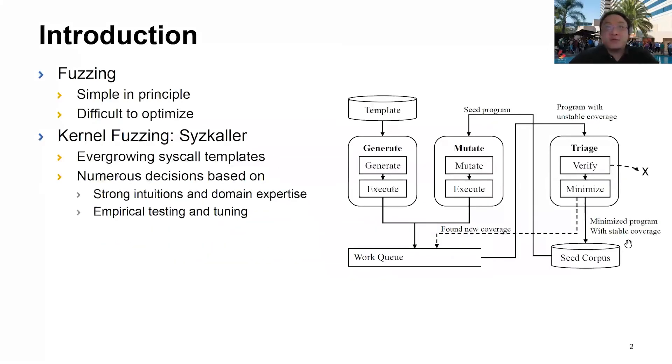Fuzzing is simple in principle. The fuzzer generates many different test inputs, sends them to the target program, and sees if the program crashes. Fuzzing is also an art. There are a large number of parameters that can be tuned, which will affect the fuzzer's effectiveness to find crashes.